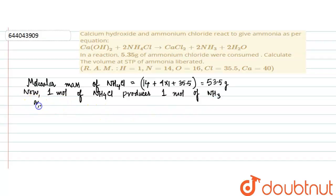Or we can write 53.5 gram of NH4Cl, as 1 mole of NH4Cl contains 53.5 gram, that is the molecular mass of NH4Cl, produces 1 mole of NH3.